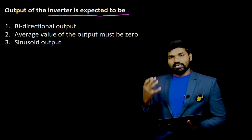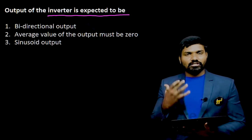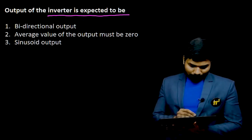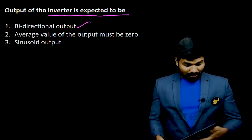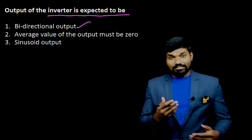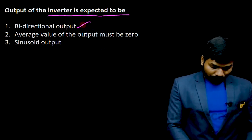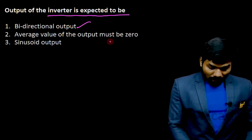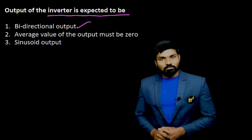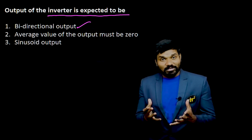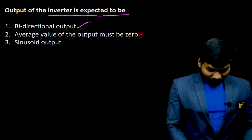What do we expect from the inverter output? What kind of nature do we expect? It should be bidirectional, because AC means alternating — or you can say bidirectional. It should be bidirectional output and the average value of the output must be 0. The average value of AC output must be 0 volts.